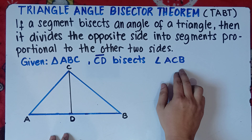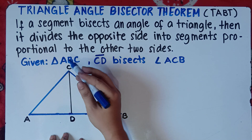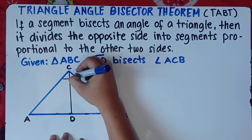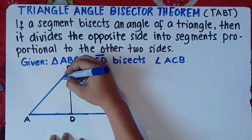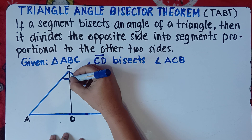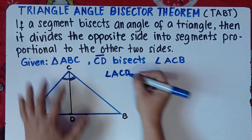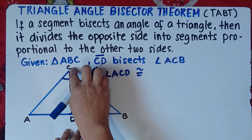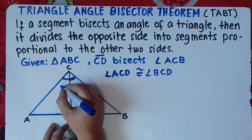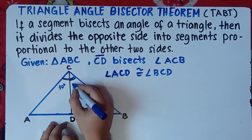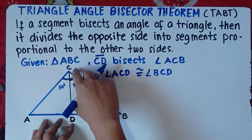Since we bisect an angle, we cut angle C — angle ACB — into two equal parts because CD bisects angle ACB. Therefore, angle ACD is congruent to angle BCD. For example, if angle ACD is 30 degrees, then angle BCD is also 30 degrees.